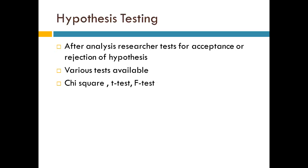Now, hypothesis testing. Once your data is collected and analyzed, you try to prove or disprove the hypotheses you previously formed — checking whether what you stated before conducting the study is still true, and whether your findings are giving you those results. After analyzing the research, test for acceptance or rejection of the hypothesis. Many tests are available for this, like chi-square test, T-test, F-test, Z-test. Through these tests we can prove whether our hypotheses were correct or incorrect. If wrong, we reject them; if correct, we accept them.